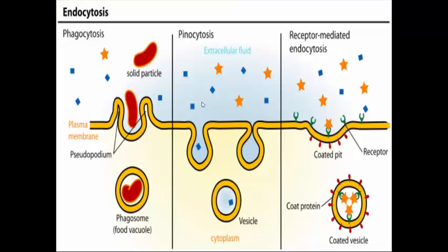Here's how endocytosis works. For pinocytosis, a vesicle forms around water droplets and takes them in. For phagocytosis, a vesicle forms around a bacterium and takes it inside the cell. For receptor-mediated endocytosis, the receptors match up with only specific particles — those are the only ones that get taken in. All three are taking material from outside the cell to inside the cell.